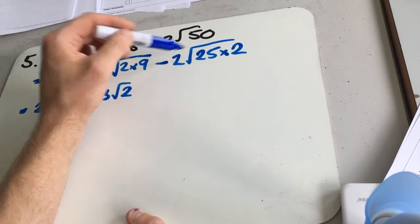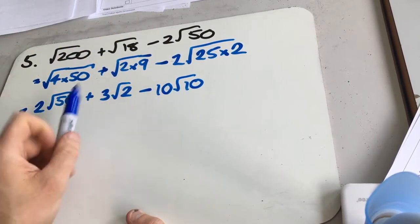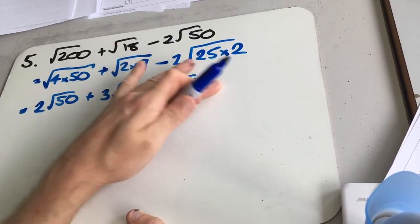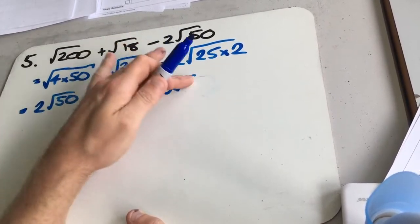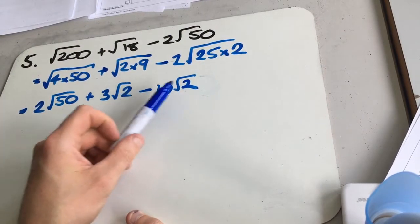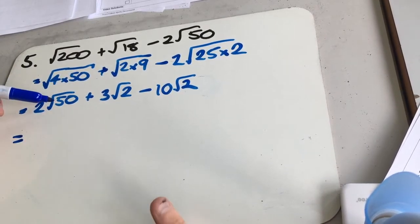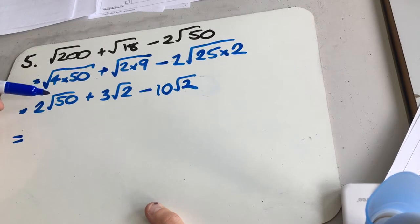Root 25 is 5, so we can get minus 10 root 2. So notice how we've got two sets of root 2s. So I think this one is going to need splitting up into another root 2 as well. So what factors could we get from 50? We've got 5 and 10, but neither of those are square or prime. We could also look at 2 times 25, which has got a square number and a prime, so I think that's what I'm going to go for.